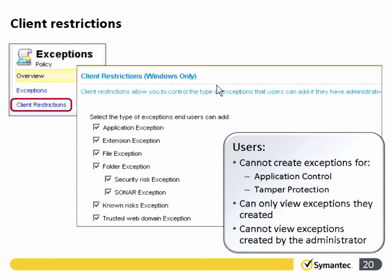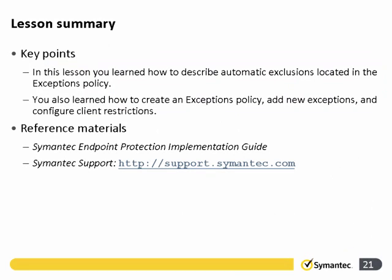You can set up client restrictions. By default, clients are able to make exceptions to the exceptions policy; however, administrator exceptions always take precedence over user exceptions. You can tick which exception types the users are allowed to add exceptions to in this table. That brings us to the end of the exceptions lesson — we should have learned how to describe the automatic exclusions and how to create an exceptions policy.